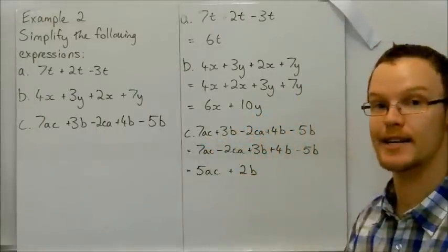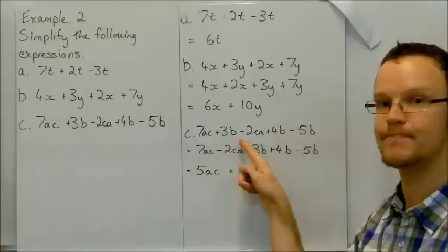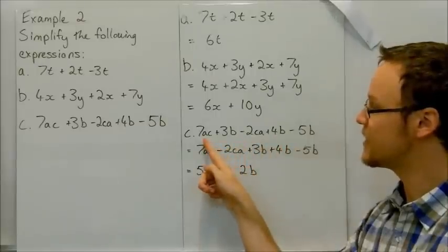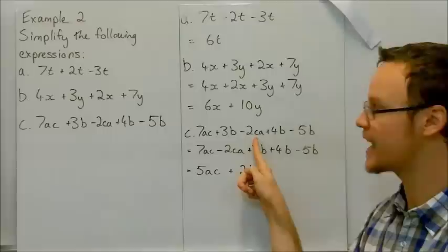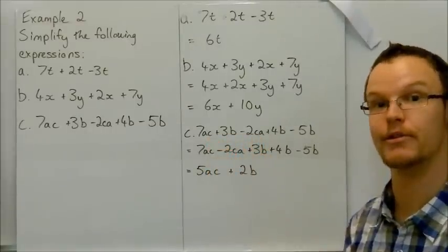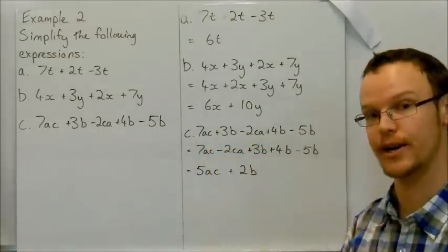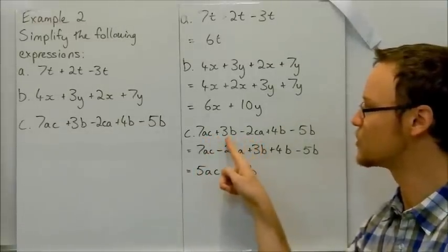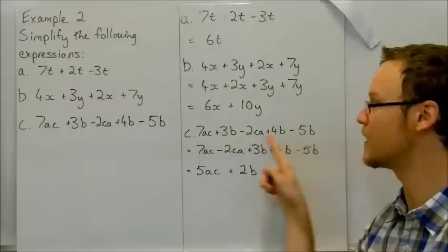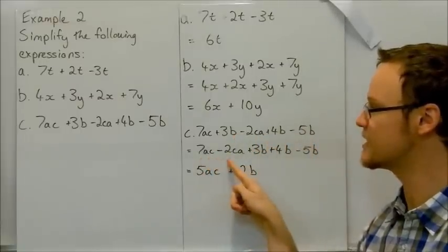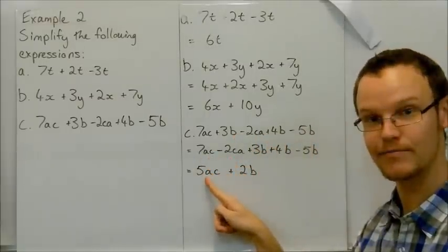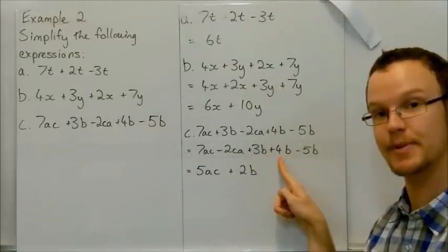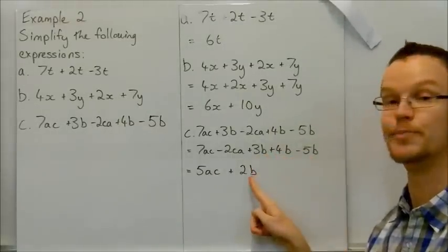Here we've got, for our last example, 7ac plus 3b minus 2ca plus 4b minus 5b. Now, 7ac and minus 2ca are like terms. They're in a different order. They're not in the same order, but they are the same combination of a times c. So they are like terms. And we've also got the b family here, and they are like terms. So 7ac minus 2ca is 5. We have 5ac's left over. And 3b plus 4b is 7b minus 5b is 2b.